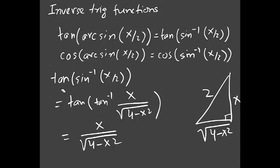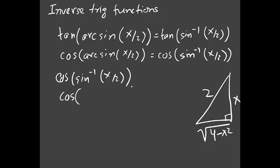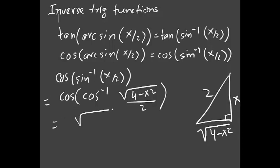For the second part, cosine of arc sine(x/2) — convert sine inverse to cosine inverse. Cosine inverse is adjacent over hypotenuse, so that's √(4 - x²) over 2. Cosine and cosine inverse cancel, and you get √(4 - x²) over 2.